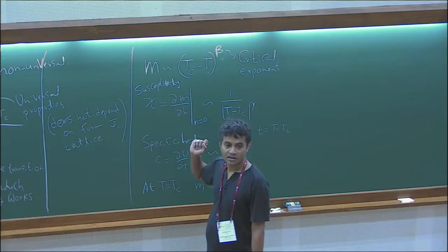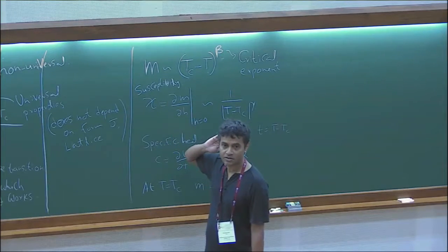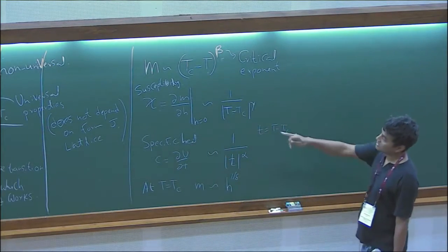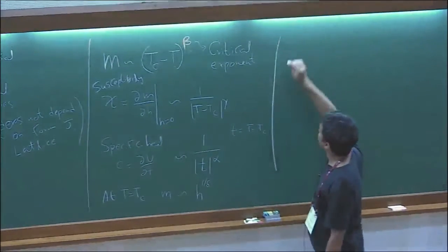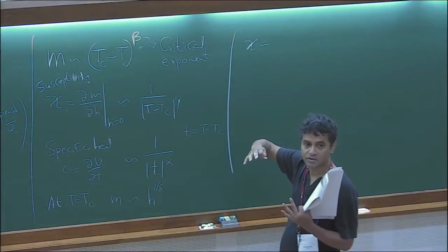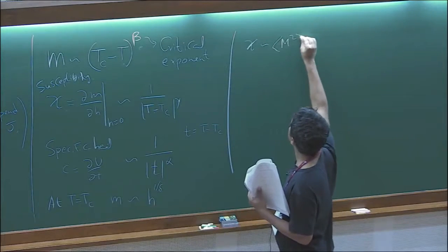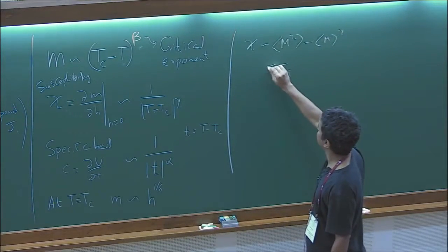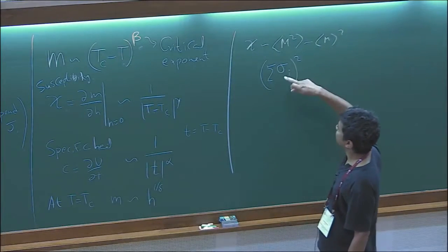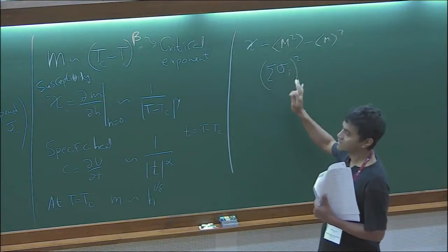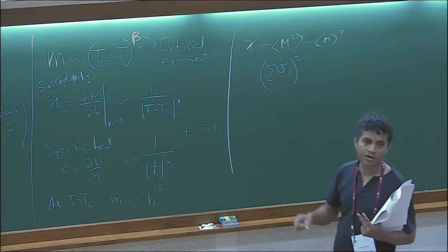When you have a diverging susceptibility, it also implies long-range correlations. Chi is basically related to fluctuations of the total magnetization — related to something like <M^2> - <M>^2. This magnetization is sum of sigma_i, and if you take the square you get correlations. So diverging susceptibility implies long-range correlations between the spins.